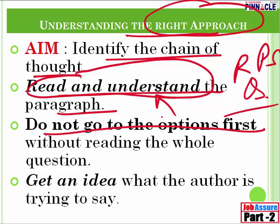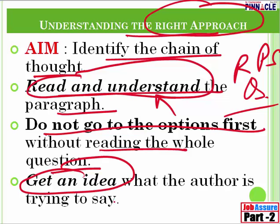Go back and first read and understand the paragraph. Try to understand what the author is trying to say. Do not go to the options first without reading the whole question. Get an idea of what the author is trying to say. Why? Because now I will tell you what is to be identified, what is to be separated, and what is to be marked while reading. Either you will have the first and last part marked — first and sixth in the case of SSC — with four sentences jumbled up, or maybe the first part hasn't been set aside clearly. I will do that type with you as well, because we don't want to leave anything to chance.